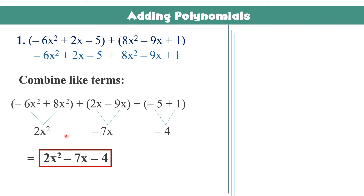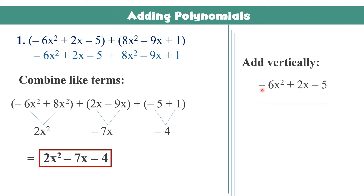Aside from this method, we can also add them vertically. To add vertically, just copy the first polynomial: negative 6x squared plus 2x minus 5. Then when writing the second polynomial, align each term with its like terms. So 8x squared must be written under 6x squared, negative 9x under 2x, and positive 1 under negative 5. Like terms must always be aligned before you proceed in addition.